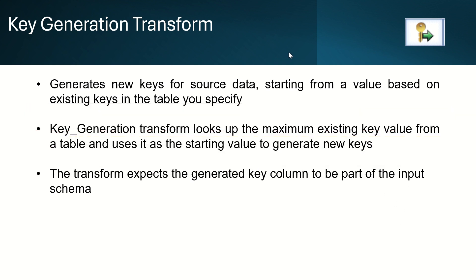Key generation transform generates unique key columns based on the unique ID we assign. It looks up the maximum existing key value from a table and uses it as the starting value to generate new keys. The subsequent key values are generated based on the existing maximum key value.